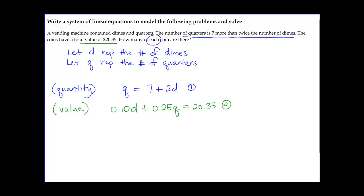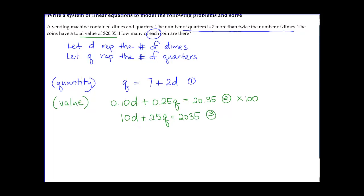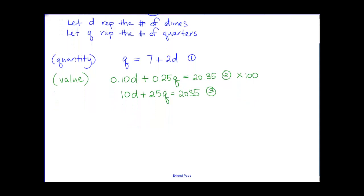The second equation has decimals. Since each coefficient has two decimal places, we multiply every term by 100 to eliminate them, giving us 10d plus 25q equals 2035. Essentially, we're converting dollar values into cents. Now with two clean equations and noticing that equation one is already isolated for q, we can use substitution.